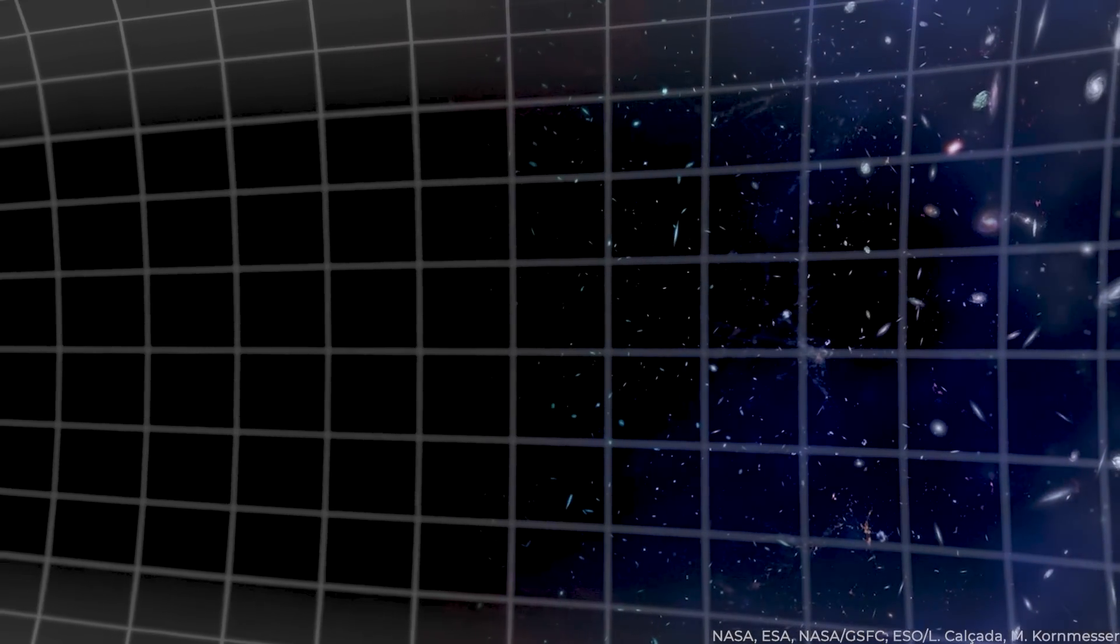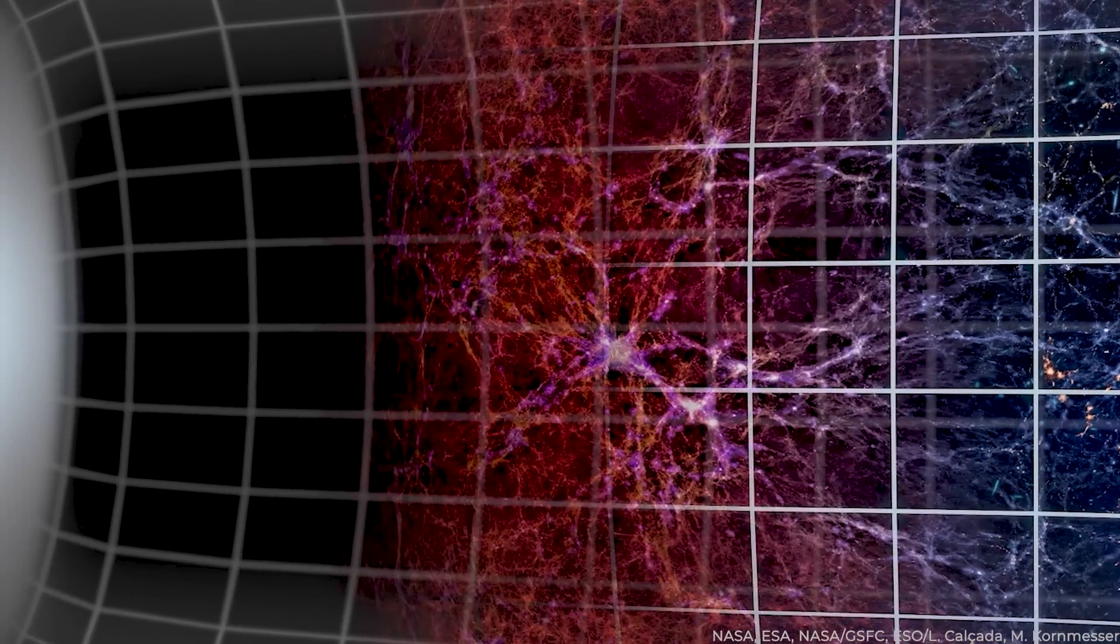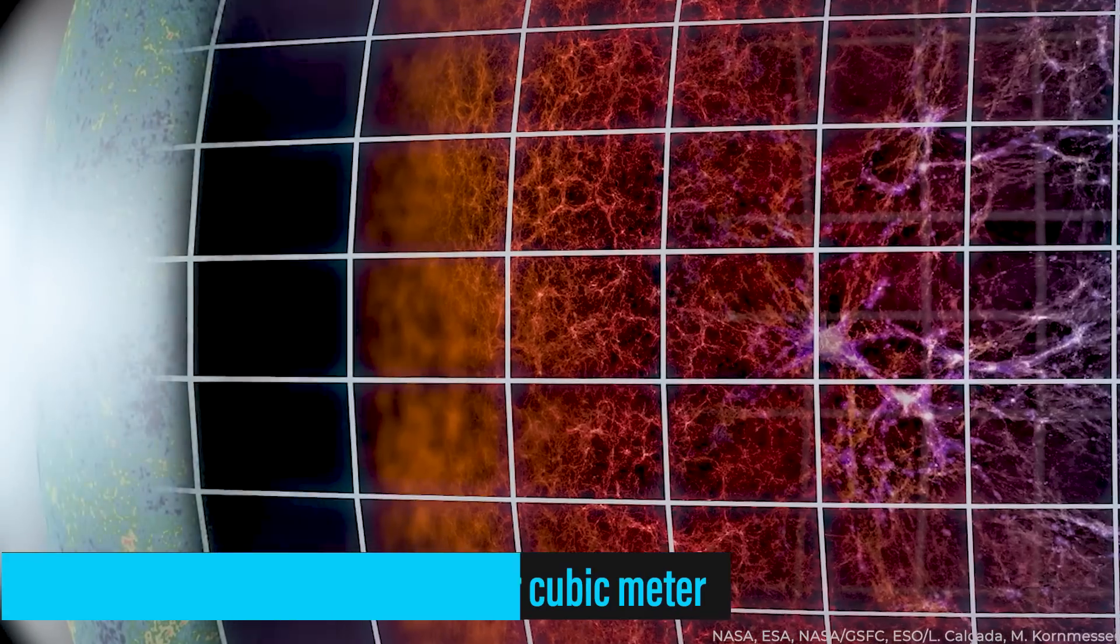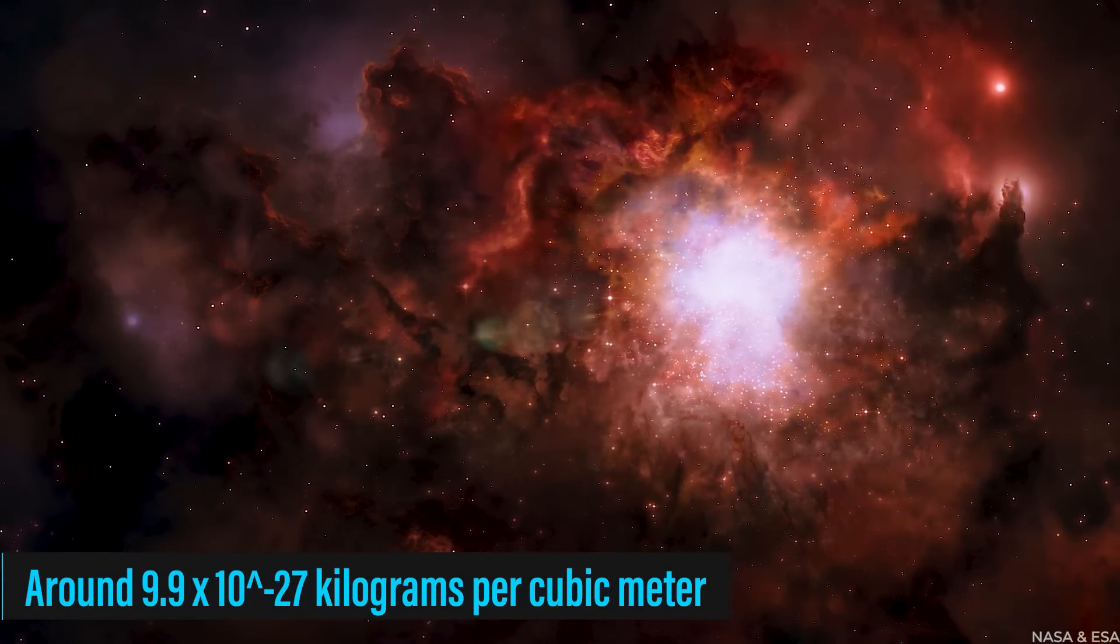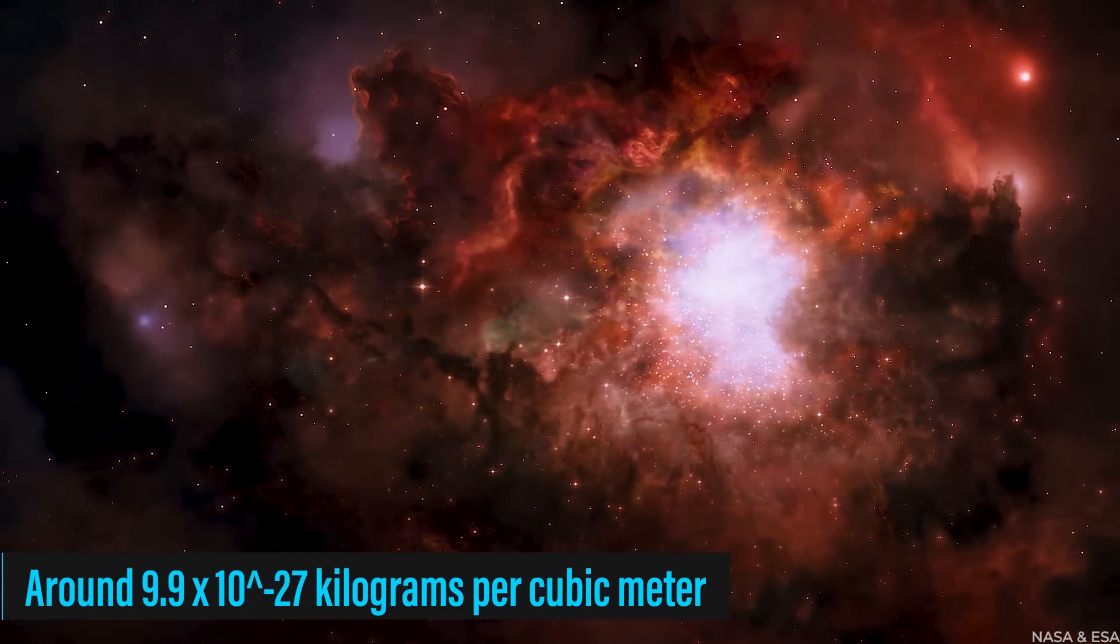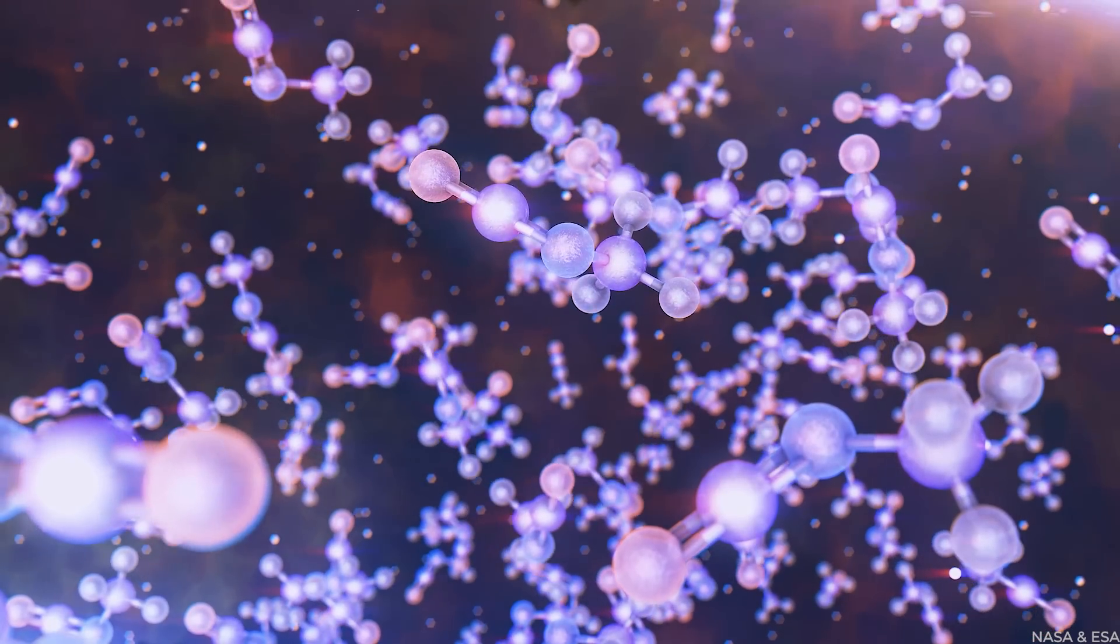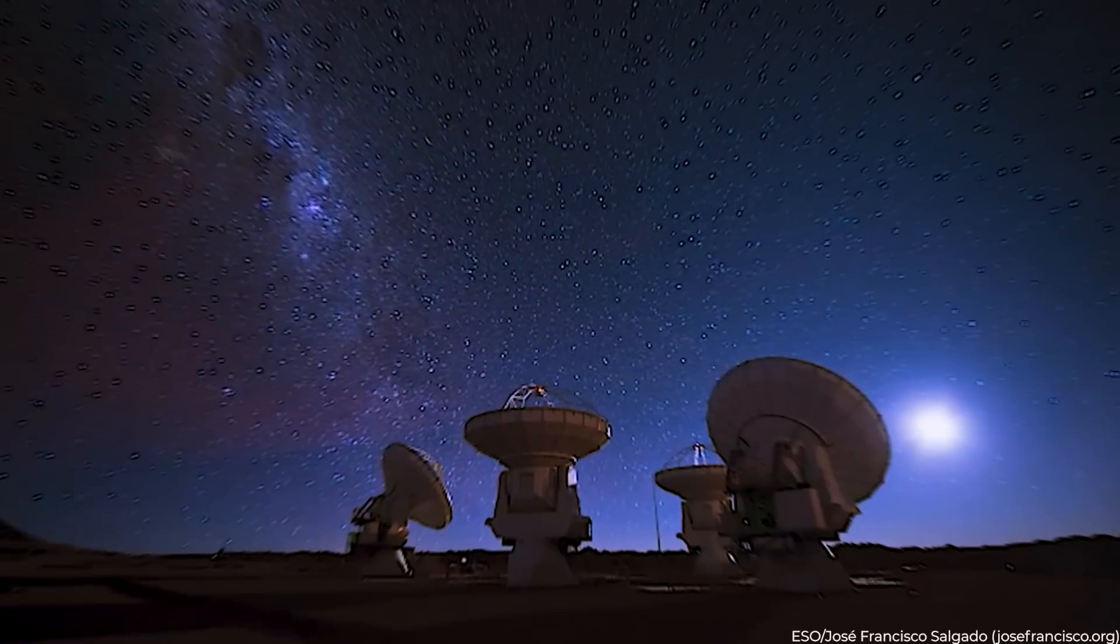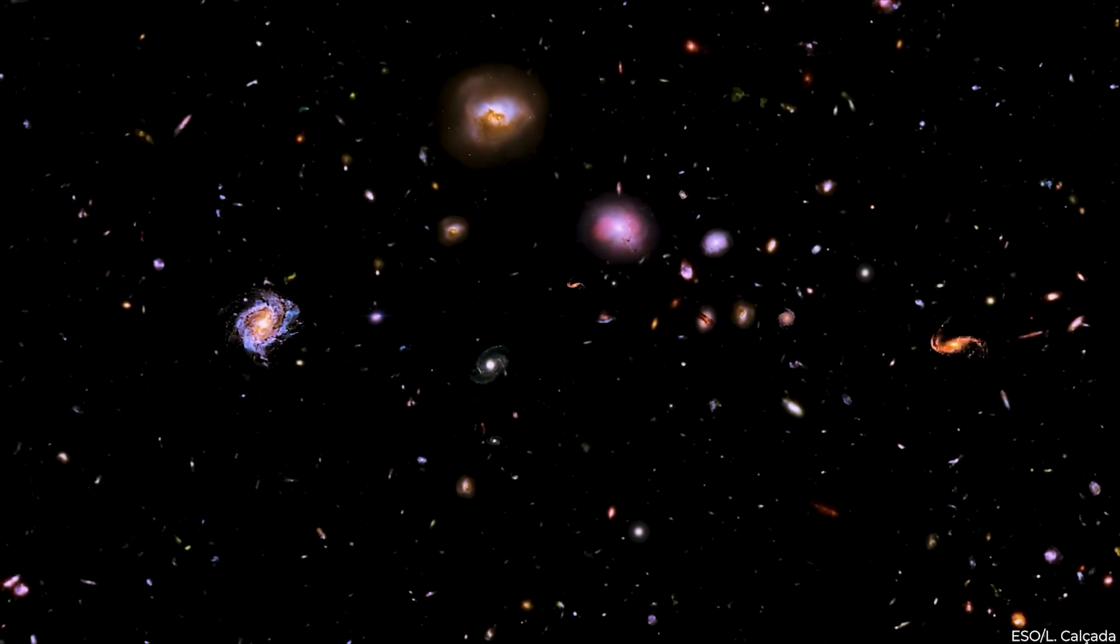And just how dense is the observable universe? Well, despite all these celestial bodies and exotic particles, the average density is incredibly low, around 9.9 times 10 to the power minus 27 kilograms per cubic meter. To give you a sense, it's about the equivalent of 6 hydrogen atoms in a cubic meter. So, while the universe is vast, in terms of actual stuff, it's a lot less crowded than you might think.